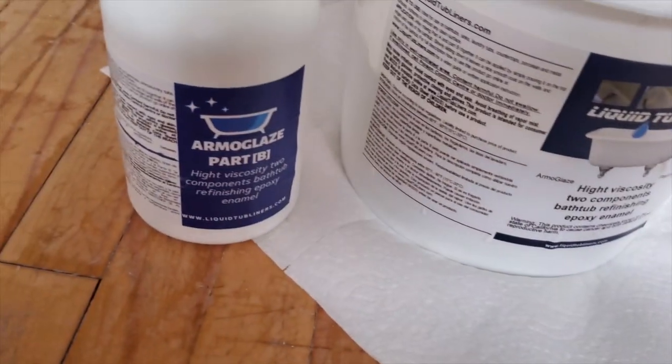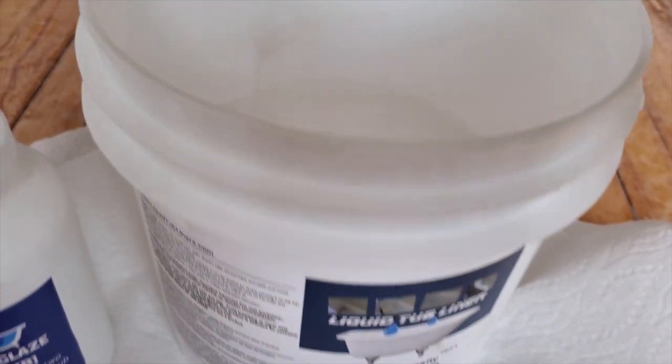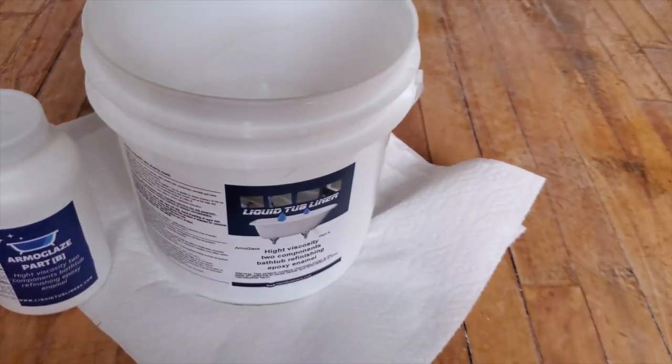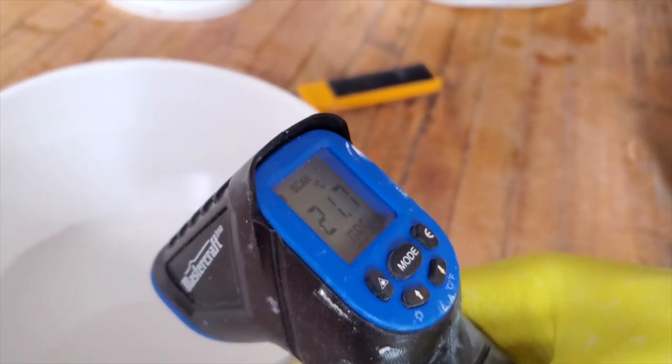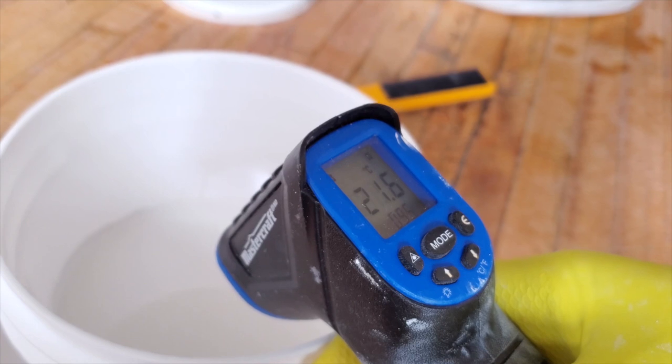Part A should be between 68 and 77 degrees Fahrenheit or 28 to 25 degrees Celsius before you begin. If it is over 77 degrees Fahrenheit or 25 degrees Celsius, then make sure that your gallon is in a cool place before using it.